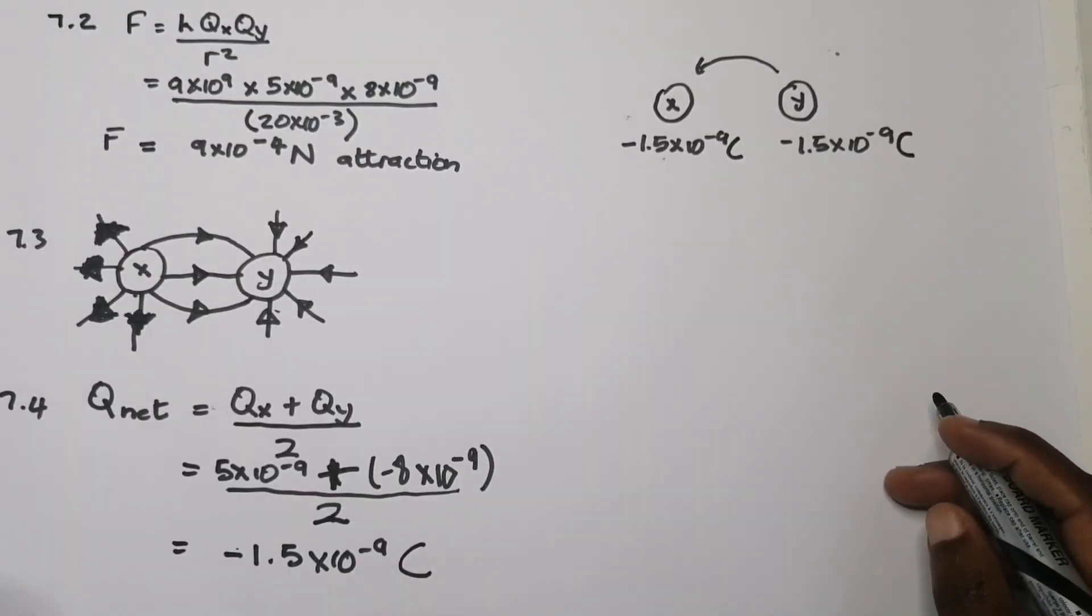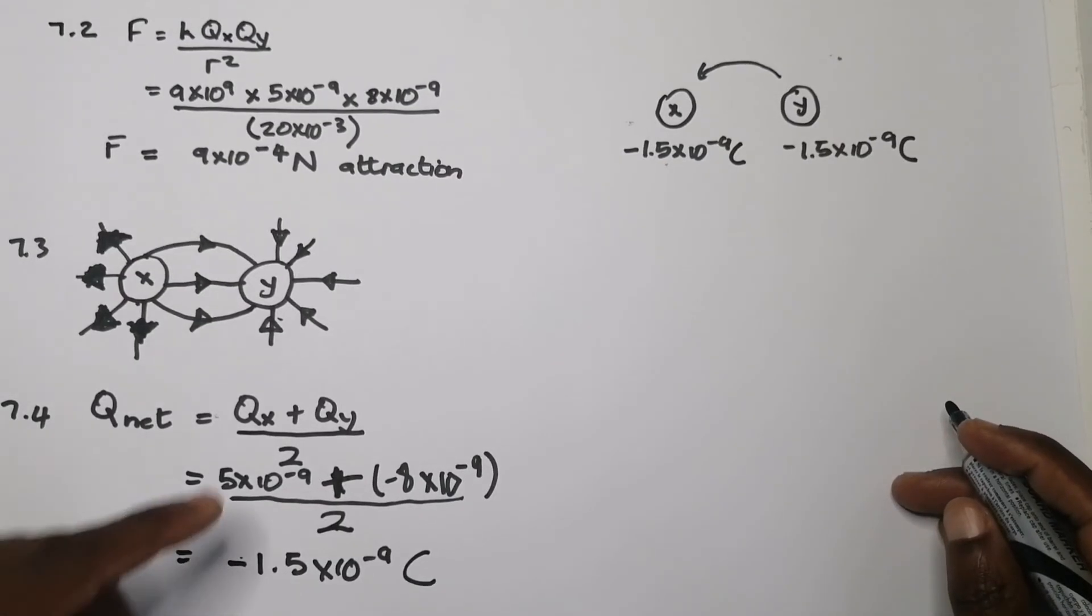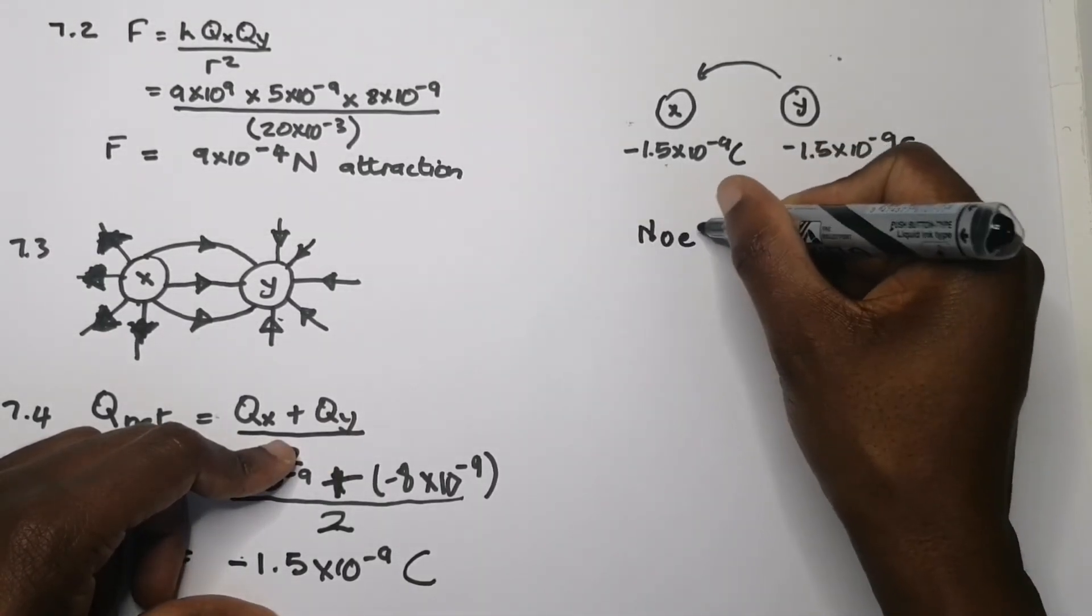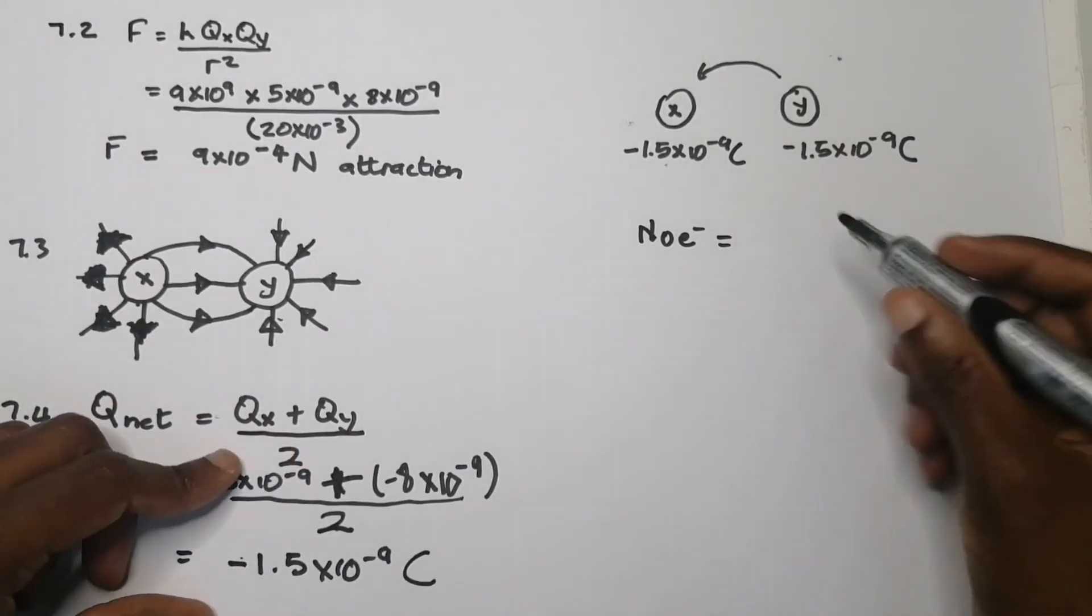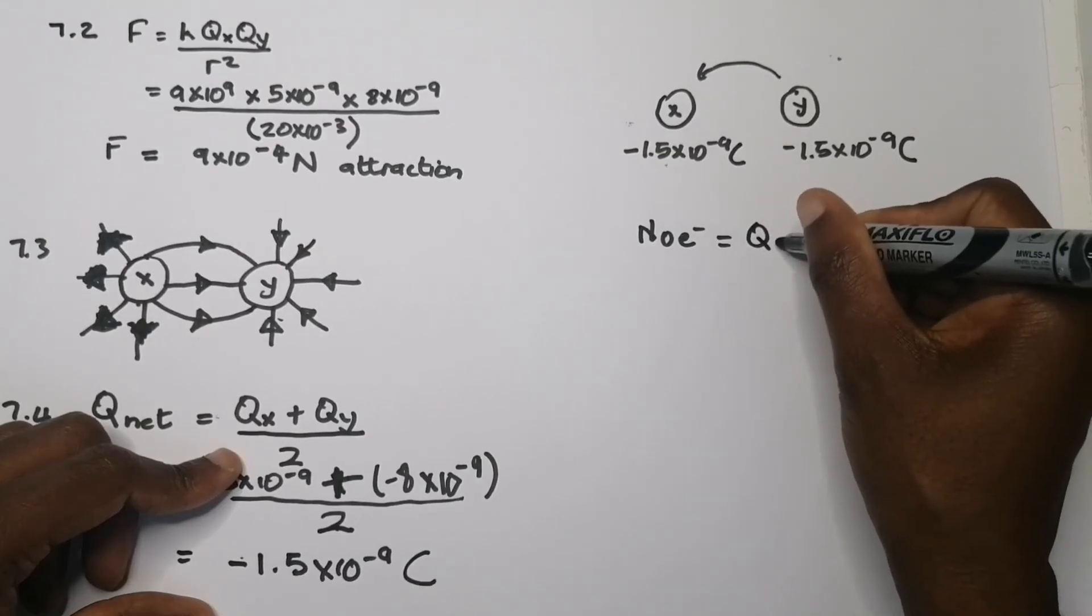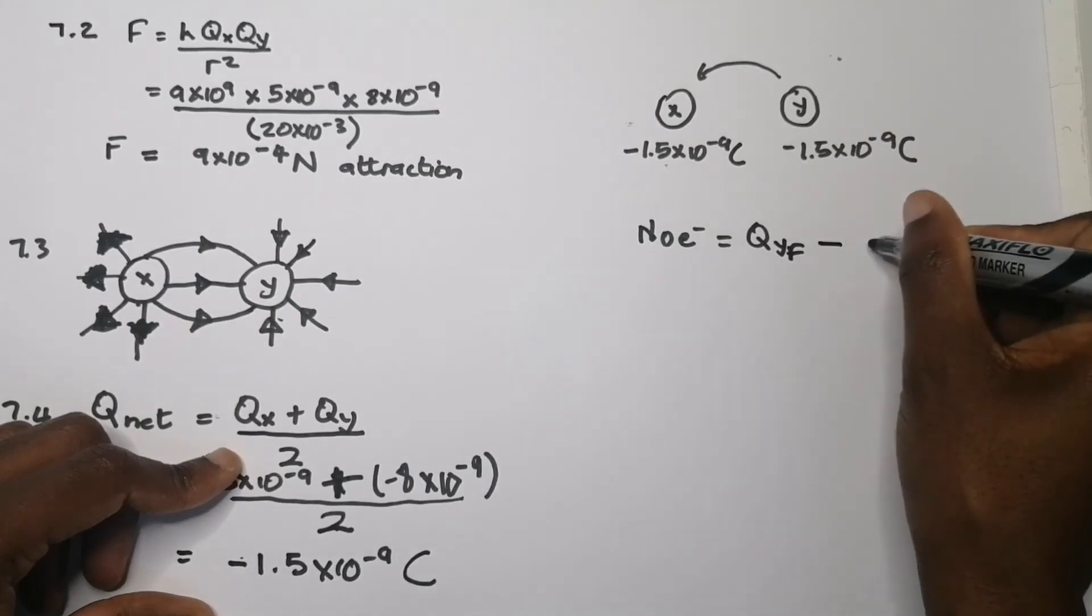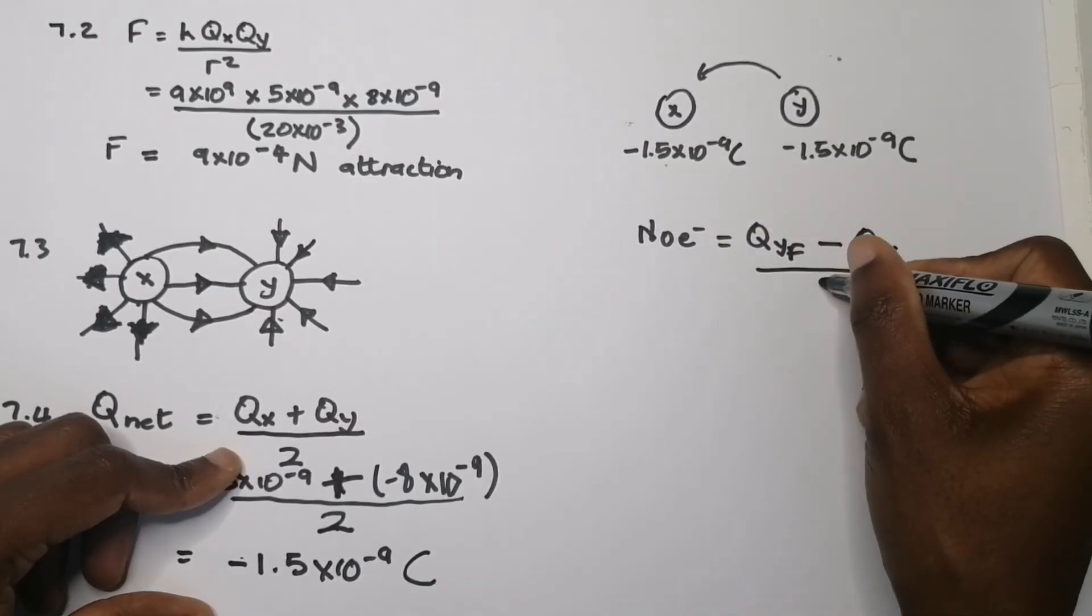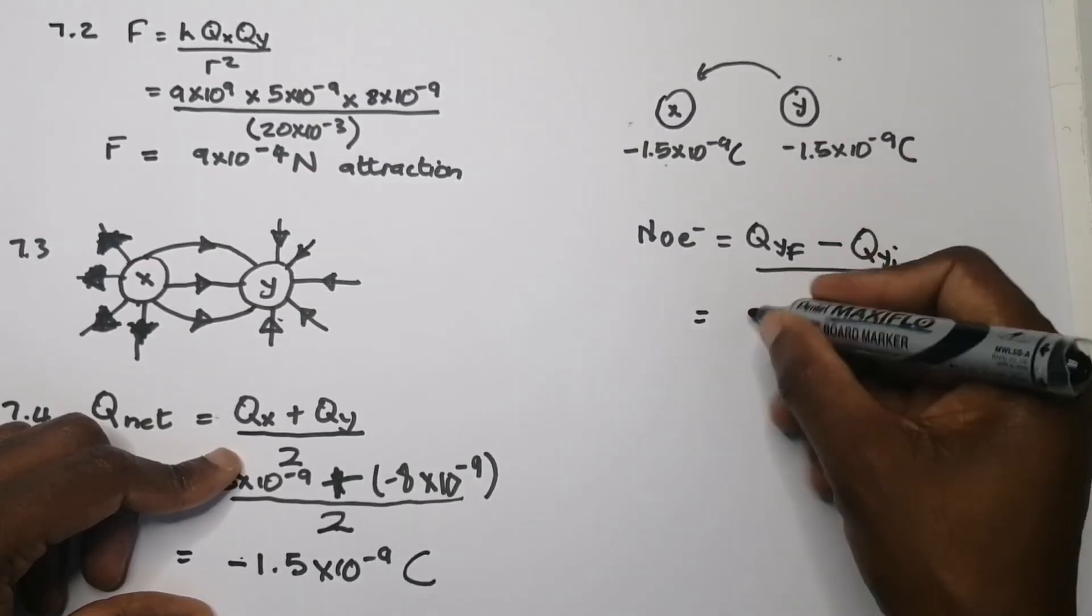So usually they used to ask the question, how many electrons were transferred? And all you simply do, ladies and gents, to find out the number of electrons transferred. So the number of electrons, you can take either one. You can take X or Y. So you can say, well, let's take the charge of Y final. That is after they touch. And you subtract the charge of Y before they touched. And you divide that by the unit charge of an electron.